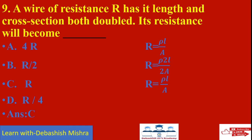A wire of resistance R has its length and cross-sectional area both doubled. What will its resistance become? Using the formula R = ρL/A: originally R = ρL/A. When we double both the length to 2L and the cross-sectional area to 2A, R = ρ(2L)/(2A) = ρL/A, which is the same. So the answer is C: resistance remains R.